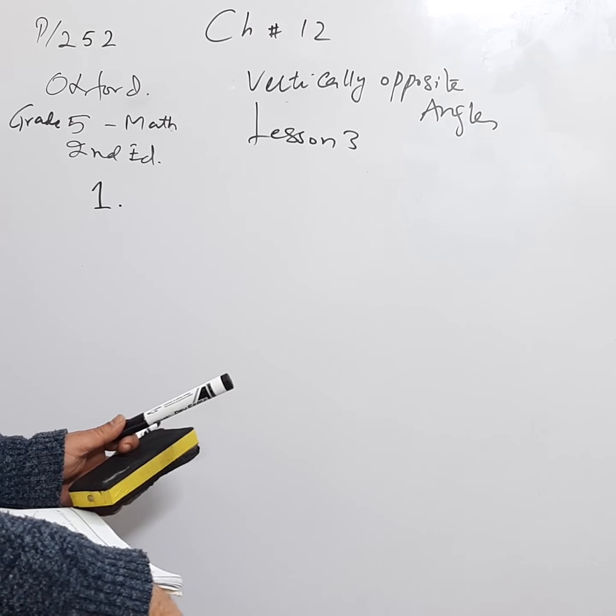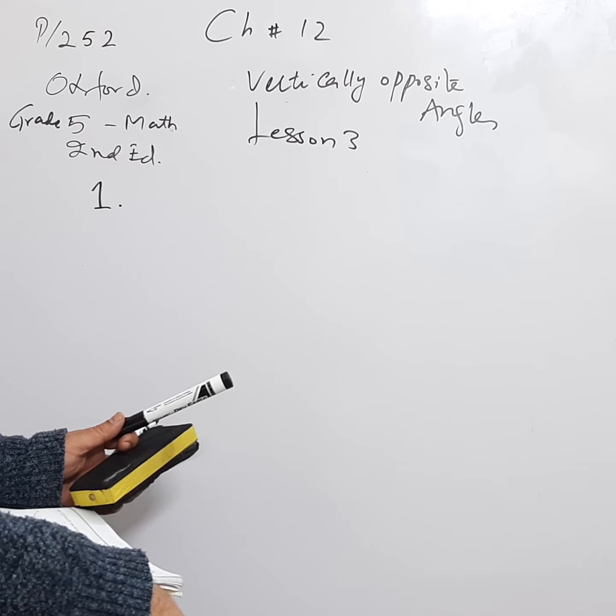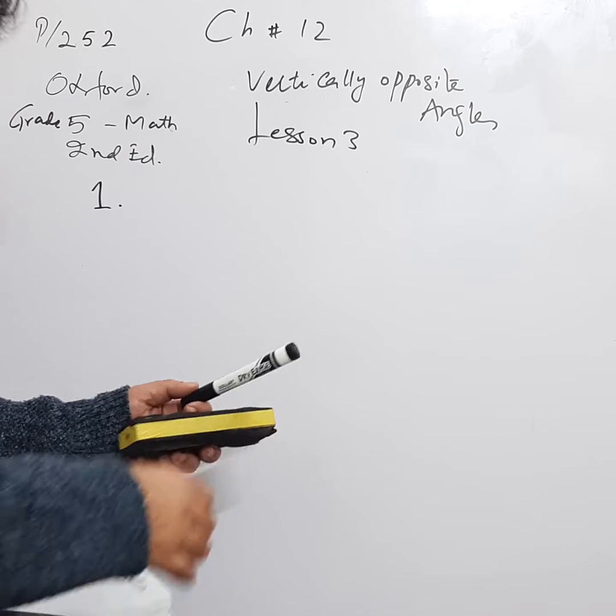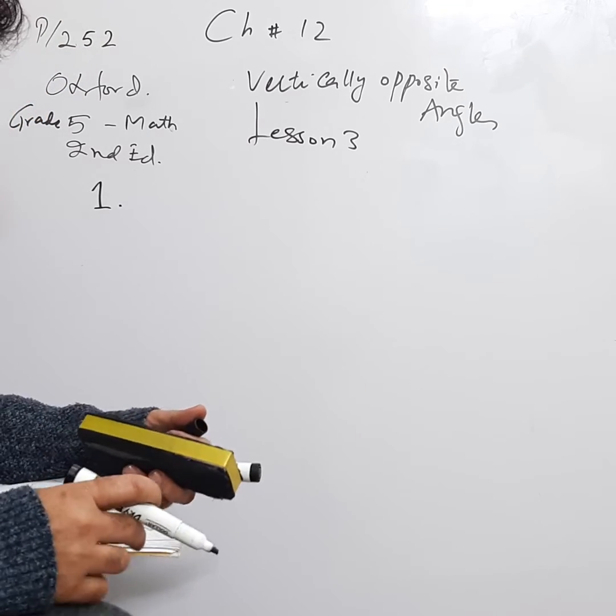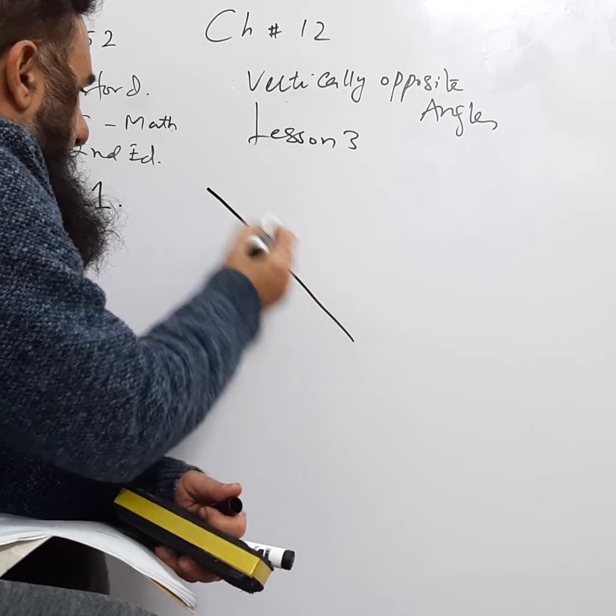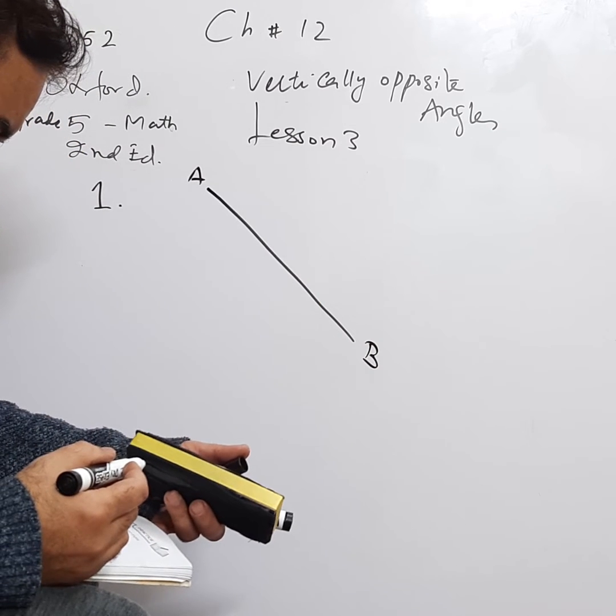We are on page 252, question number one. A, B, C, D, E, and F are straight lines. Find the unknown marked angles. A, B, I'll make bold for you. This is A, this is B, A, B, C, D.